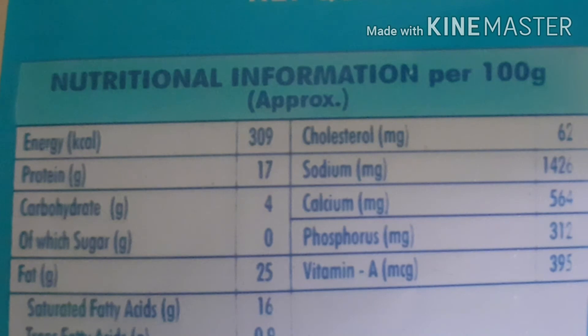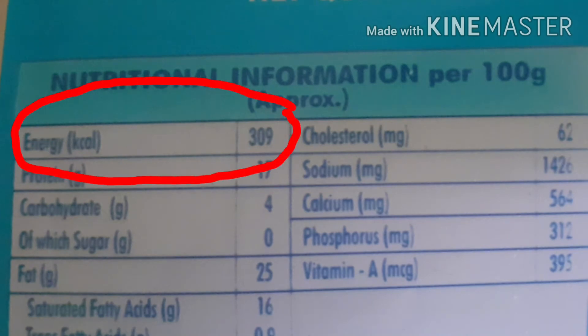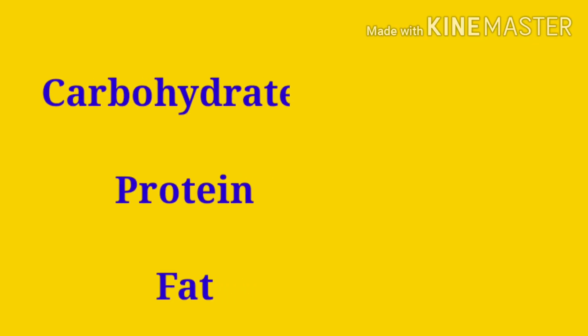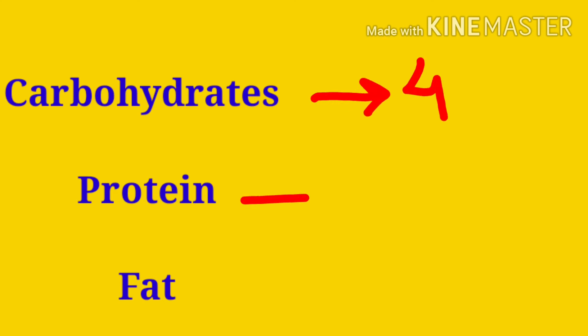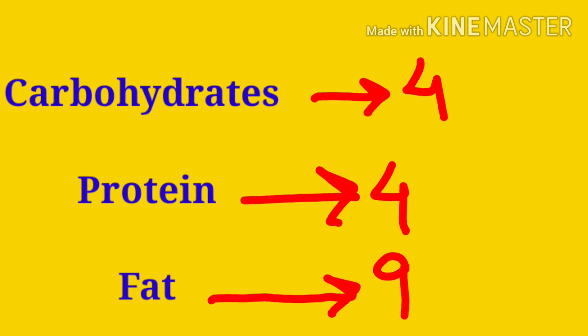For the energy declaration that you see on most packets, companies or manufacturers use the following conversion factors: for carbohydrates it is 4 kilocalories per gram, for protein it is 4 kilocalories per gram, and for fat it is 9 kilocalories per gram.